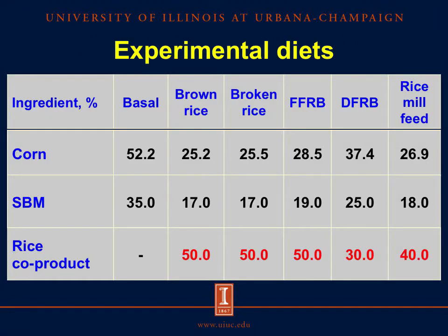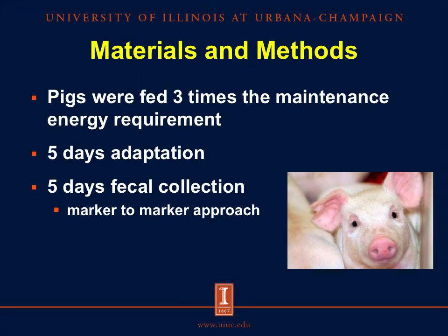In this table, we can see the ingredient composition of the experimental diets, where the ratio between corn and soybean meal remained constant and the inclusion of rice coproducts was 50% for brown rice, broken rice, and full-fat rice bran, and 30% and 40% for defatted rice bran and rice mill feed, respectively. The pigs were fed 3 times the maintenance energy requirement, and they had 5 days of adaptation period and 5 days of fecal collection, using a marker-to-marker approach.